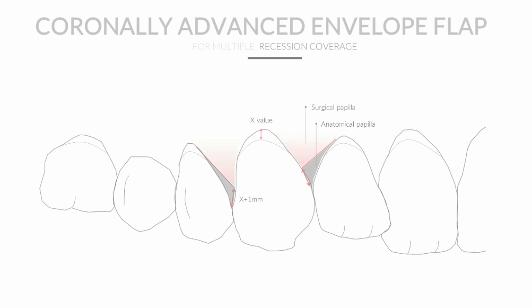We then proceed to the lateral incisor and transpose the recession value to its mesial papilla margin, which will serve as the end point of an incision starting at the apical margin of tooth number 11. We then repeat this procedure for the first premolar, transposing the recession depth values only to the papilla margin distal to the respective tooth.